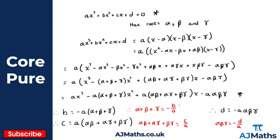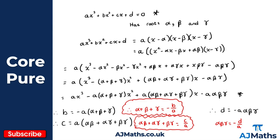There's a lot of work on that screen, but the three results we're concerned about are in red: the sum of the roots is minus b over a; alpha beta plus alpha gamma plus beta gamma is c over a; and the product of the roots alpha beta gamma is minus d over a. Deriving the result for a cubic is a lot more work than for a quadratic, so in an exam you ideally want to memorize these three results.